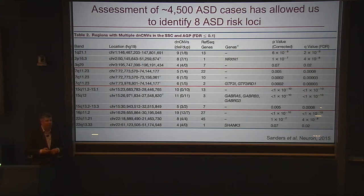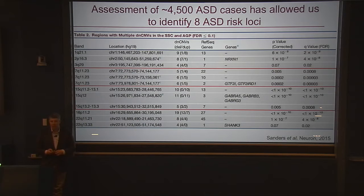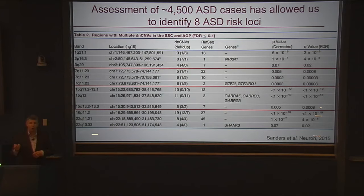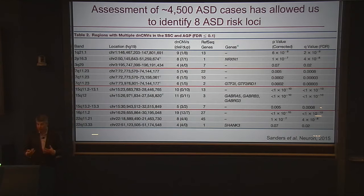We can also do the same with copy number variants, finding 8 distinct regions where they cluster. I'd like to draw attention to the 7q11.23 locus. This is a particularly fascinating region, previously associated with Williams Syndrome: a large deletion there causes Williams Syndrome, including a heart defect and an increase in social engagement — almost the opposite of autism. What we found here was the opposite: instead of losing that section of DNA, there was an increase in DNA at the very same place, now associated with autism. Within this region, something is regulating our ability to engage socially — an important insight into what autism may be.